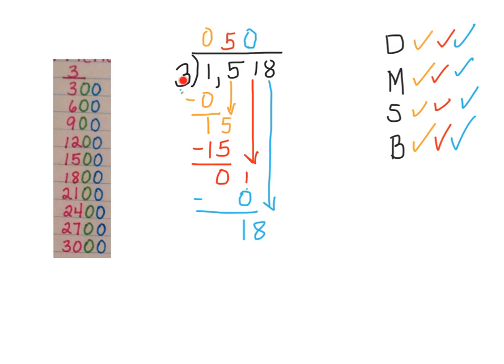Now I'm ready to go back to divide again. 18 divided by 3. I find it on my friendly number list. That would be 6. 6 times 3 is 18. I subtract. I get 0. And there's nothing to bring down. So I am finished with this problem.